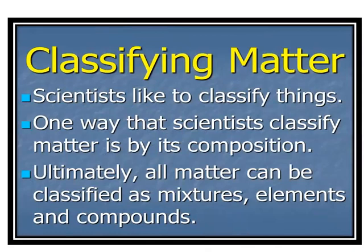Classifying matter includes classifying things. One way of classification of matter we have already discussed in lesson one, based on the physical properties of matter. The other way of classification of matter is by its composition, that is the chemical properties of matter. On the basis of chemical properties, all matter can be classified as mixtures, elements and compounds.